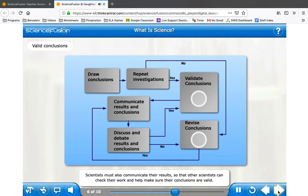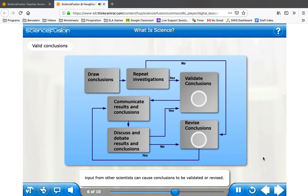Scientists must also communicate their results so that other scientists can check their work and help make sure their conclusions are valid. Click revise conclusions or validate conclusions to see two examples of ways that repeated investigations and input from other scientists can cause conclusions to be validated or revised.